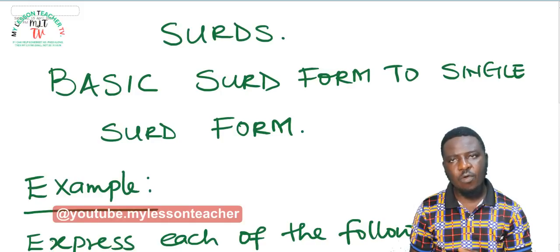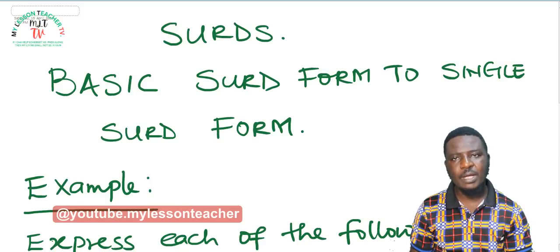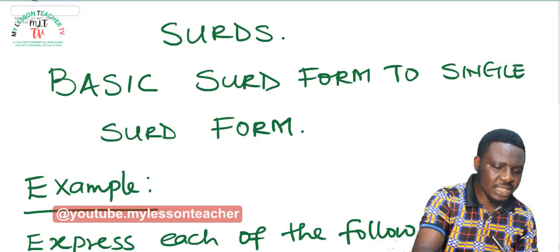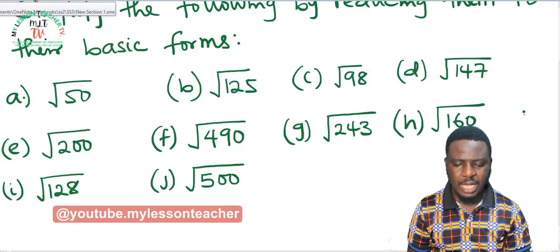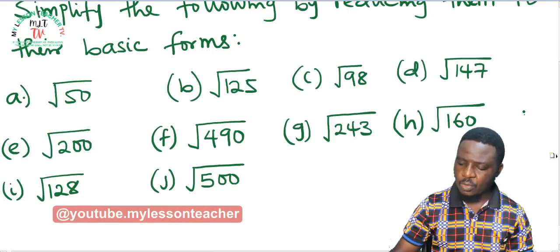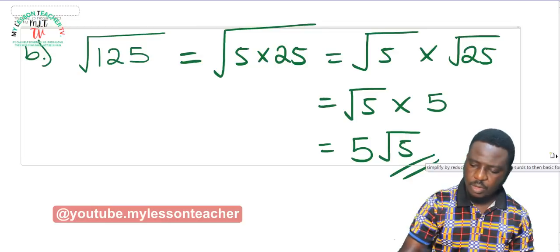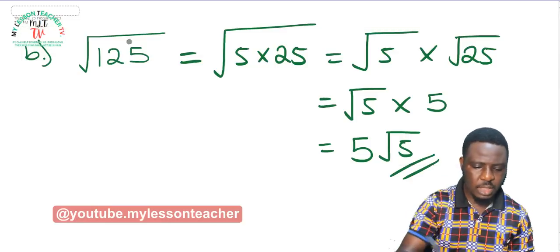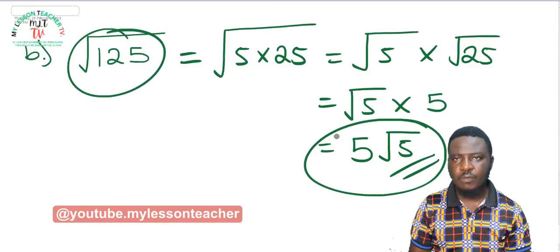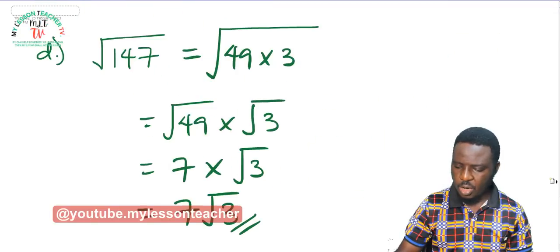For example, 2 times 4 will give you 8. 4 is a perfect square because the square root of 4 is 2, which is also a whole number. So 8 can be expressed as 2 times 4 and can be reduced from its single surd form to its basic surd form. At the last class I gave you examples on surds in their single surd form and how to convert them to basic surd form. For example, I was able to convert root 125 to 5 root 5.